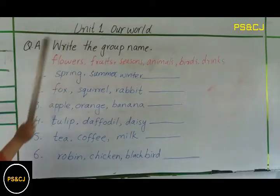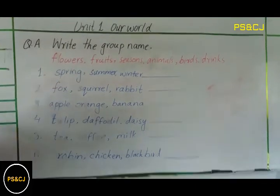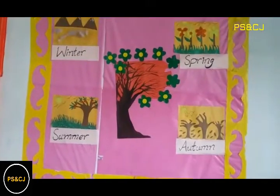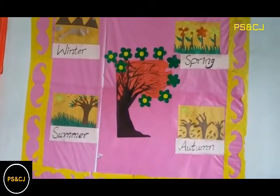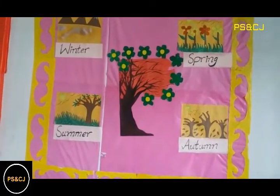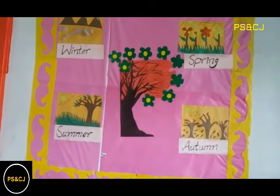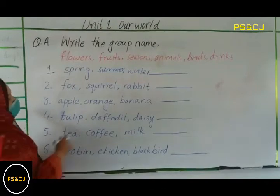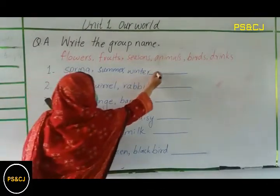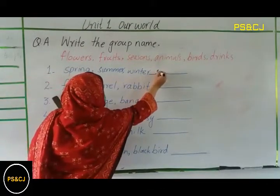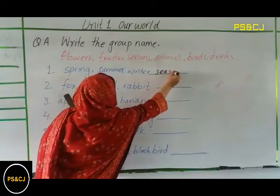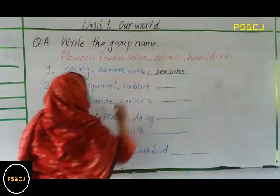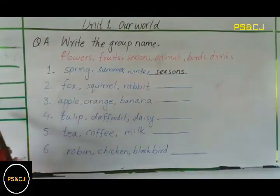Winter, spring, summer, autumn — these are seasons. Spring, summer, winter — their group name is season.